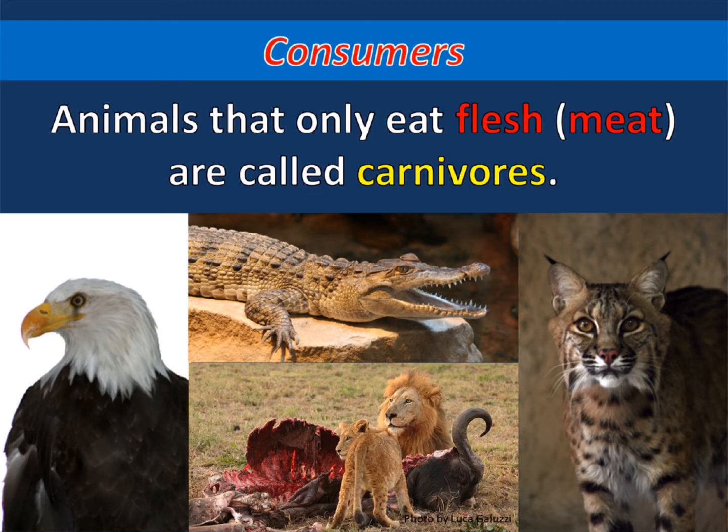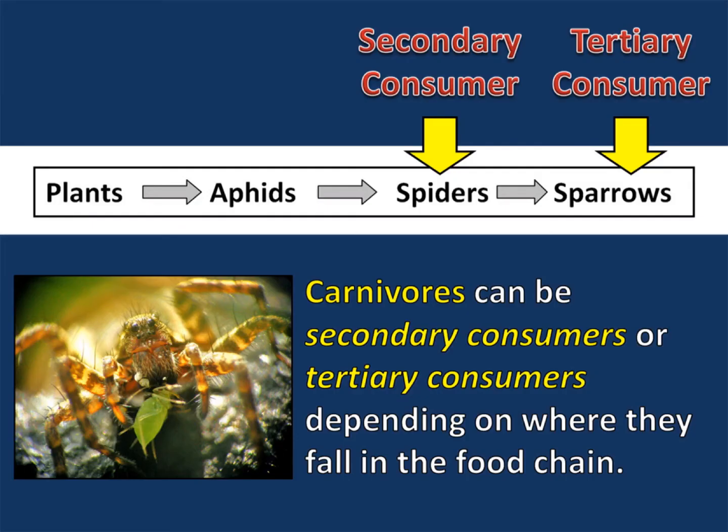Animals that only eat flesh, or meat, are called carnivores. Carnivores can be secondary consumers or tertiary consumers, depending on where they fall in the food chain.